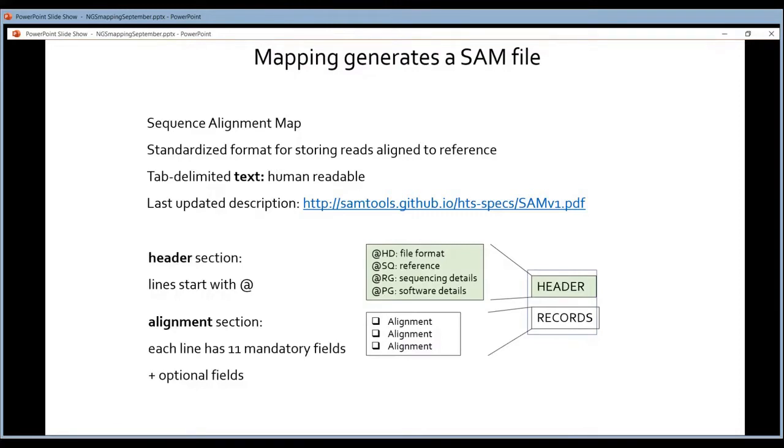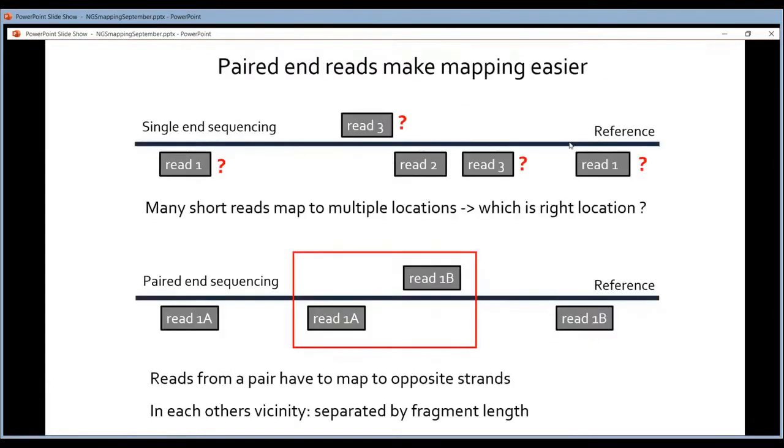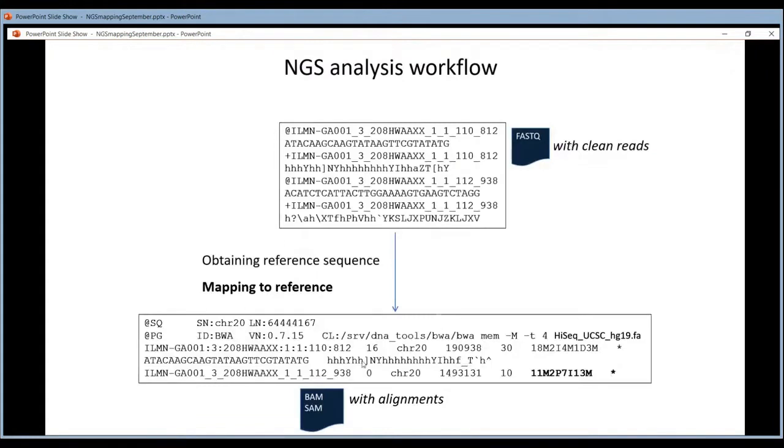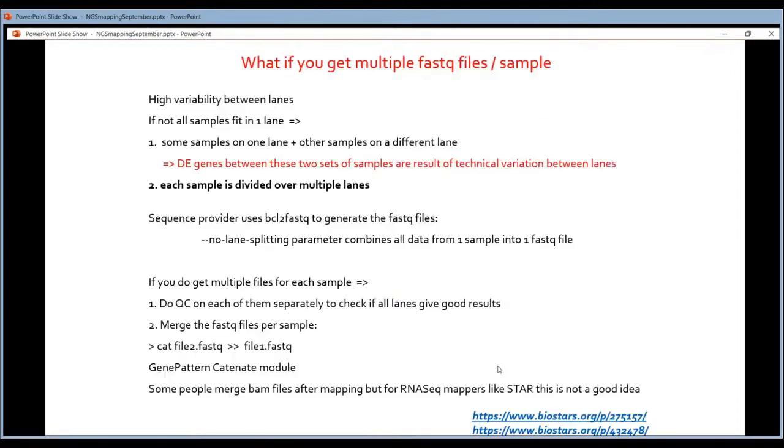After the mapping, what is generated is what is called a SAM or a BAM file. I've already shown you these files that contain the information from the FASTQ file and extra information on the mapping.